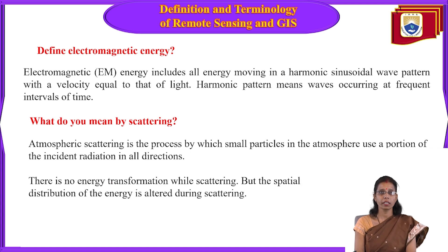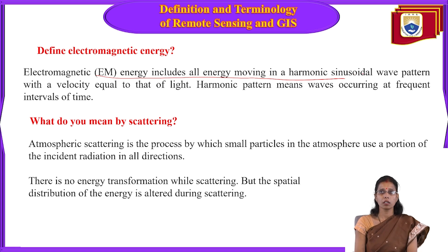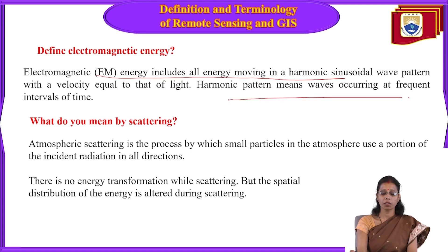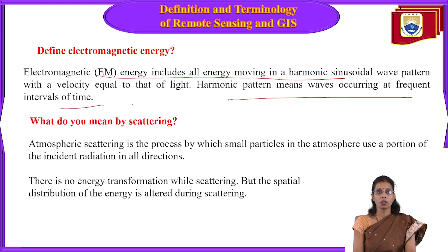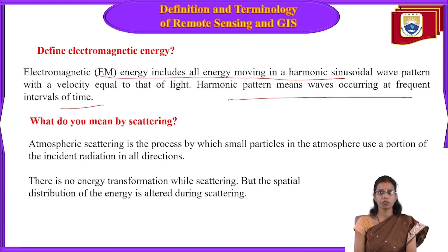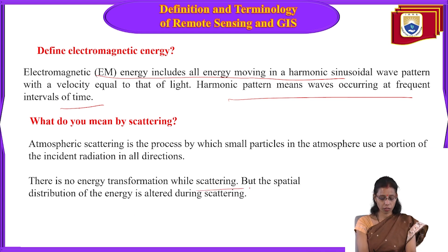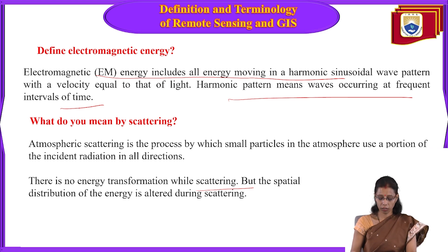Electromagnetic energy includes all energy moving in a harmonic sinusoidal wave pattern with a certain velocity. Atmospheric scattering is due to small particles present in the atmosphere, which redirect a portion of incident radiation in all directions. There is no energy transformation with scattering, but the spatial distribution of energy is altered.